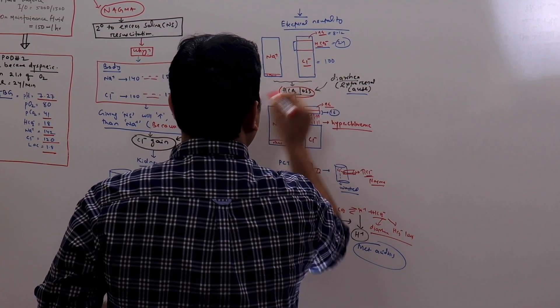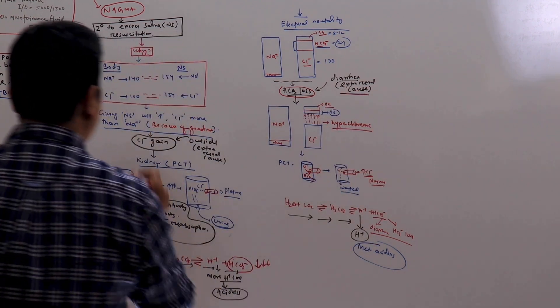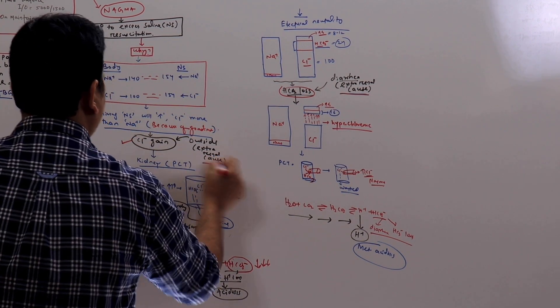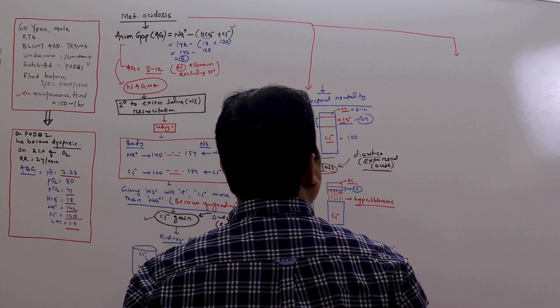That is called metabolic acidosis. This is bicarb loss, external cause. This was chloride gain, external cause.